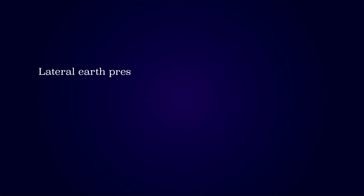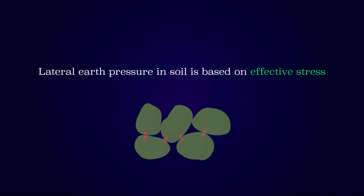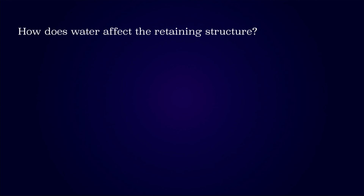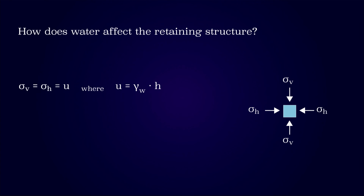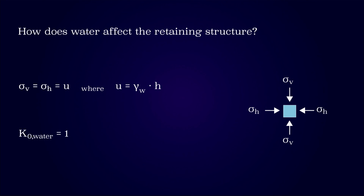The lateral earth pressure in soil is based on effective stress, since this represents the stress distribution within the soil particles. However, sometimes the water table is present, which reduces the effective stress. Like the soil, the water will also exert a lateral pressure on the retaining structure. The stress distribution of water is hydrostatic and acts equal in all directions at a given depth, determined by calculating the pore water pressure. Water can be considered as having an at-rest coefficient of 1.